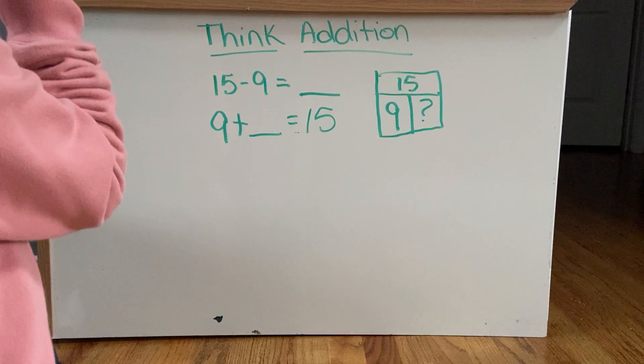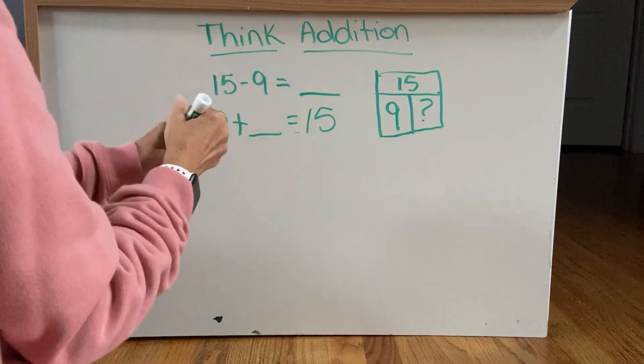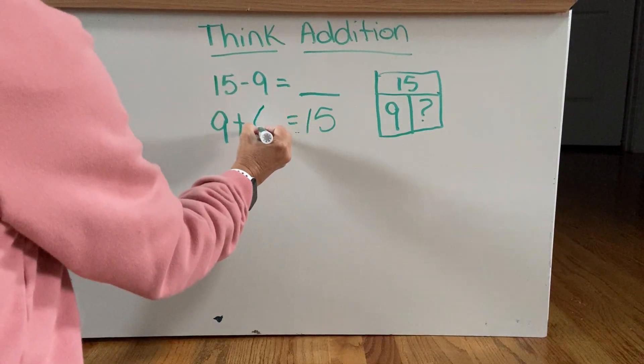So you would say 9 in your head, 10, 11, 12, 13, 14, 15. And your answer is 6.